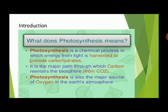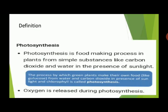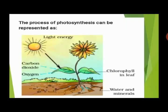The leaves of a plant are green because they contain tiny green colored bodies called chloroplasts, which contain a green pigment called chlorophyll. The chlorophyll uses solar energy to prepare food from carbon dioxide and water. The process by which green plants make their own food from carbon dioxide and water, using solar energy in the presence of chlorophyll, is called photosynthesis.